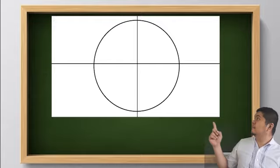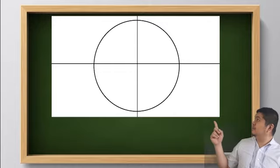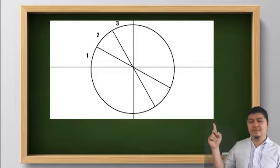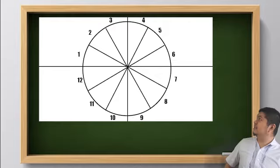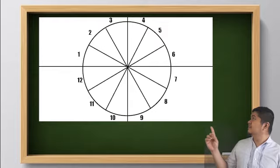Divide one of the sides into three groups. Then, you need to construct twelve pieces or twelve parts of the circle.